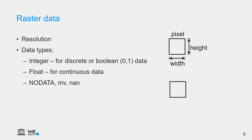A specific form of values that we store in the pixel is no data. That's a value that indicates to the GIS software that these pixels should not be used in the calculations, because, for example, they are masked because of clouds or they are invalid data from sensors. Depending on the software, this is called no data, MV (missing value), or none, not a number.